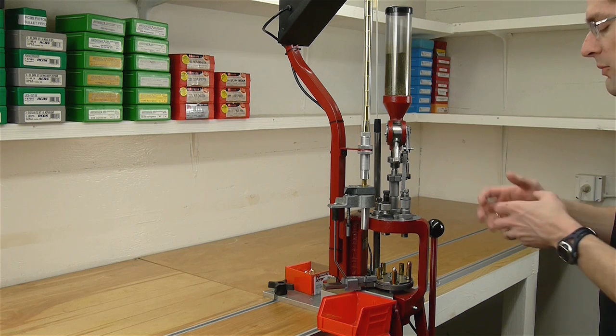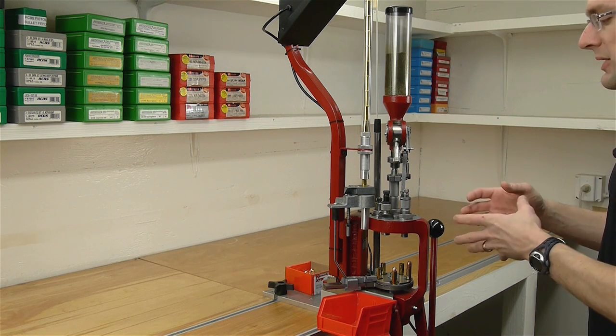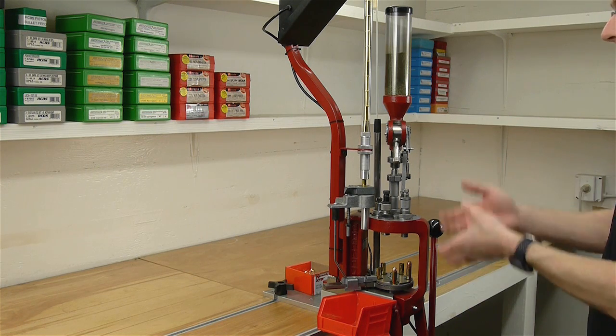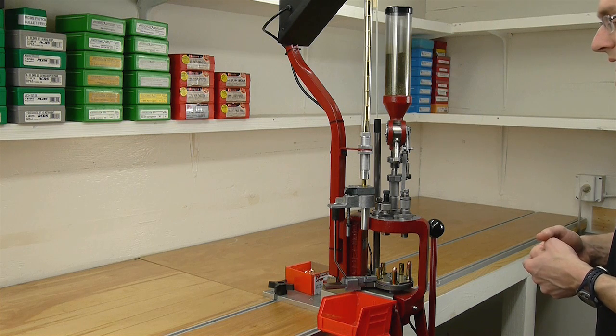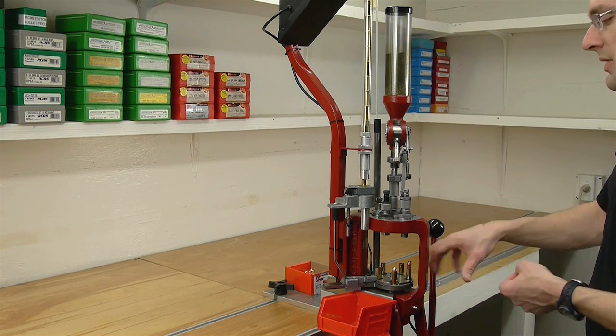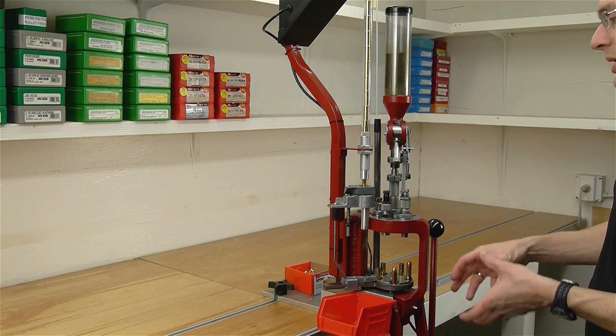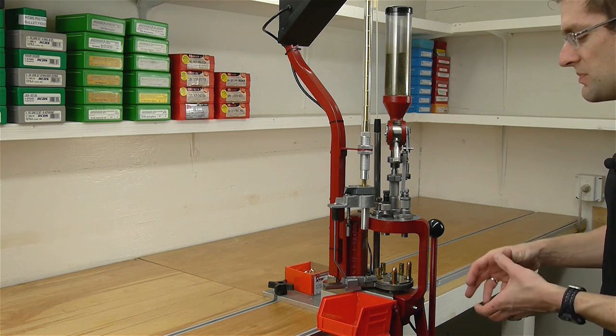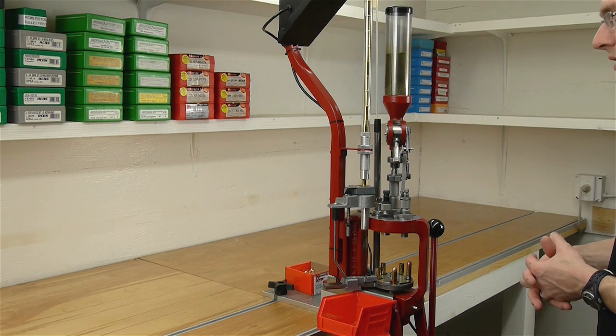So every time we pull the handle we have a completed cartridge. We have up to five different stations acting at the same time. And since this is an auto-indexing press we don't have to flip anything, we don't have to worry about double charges because we forgot to index or anything along those lines.